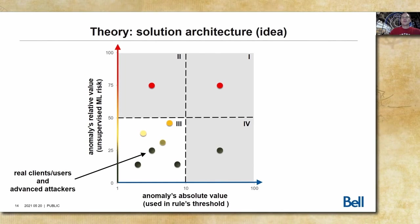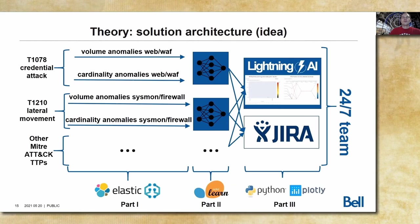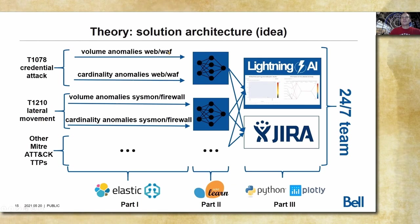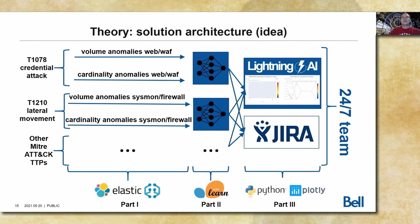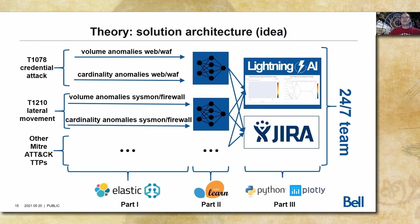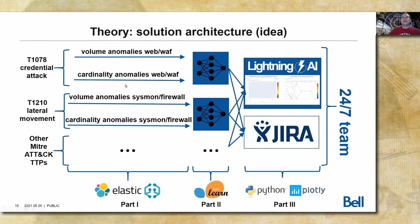Let's look into our specific solution architecture. Here we can see different TTPs — credential attack, lateral movement. There are many unsupervised machine learning jobs, as they all look into different types of logs, for example web logs and WAF logs. Multi-dimensionality is our power. They also look into different types of anomalies: volume anomalies and cardinality anomalies. For example, a volume anomaly could be the number of login connections to the login page per minute, and a cardinality anomaly could be the number of distinct users connecting to our login page per minute.